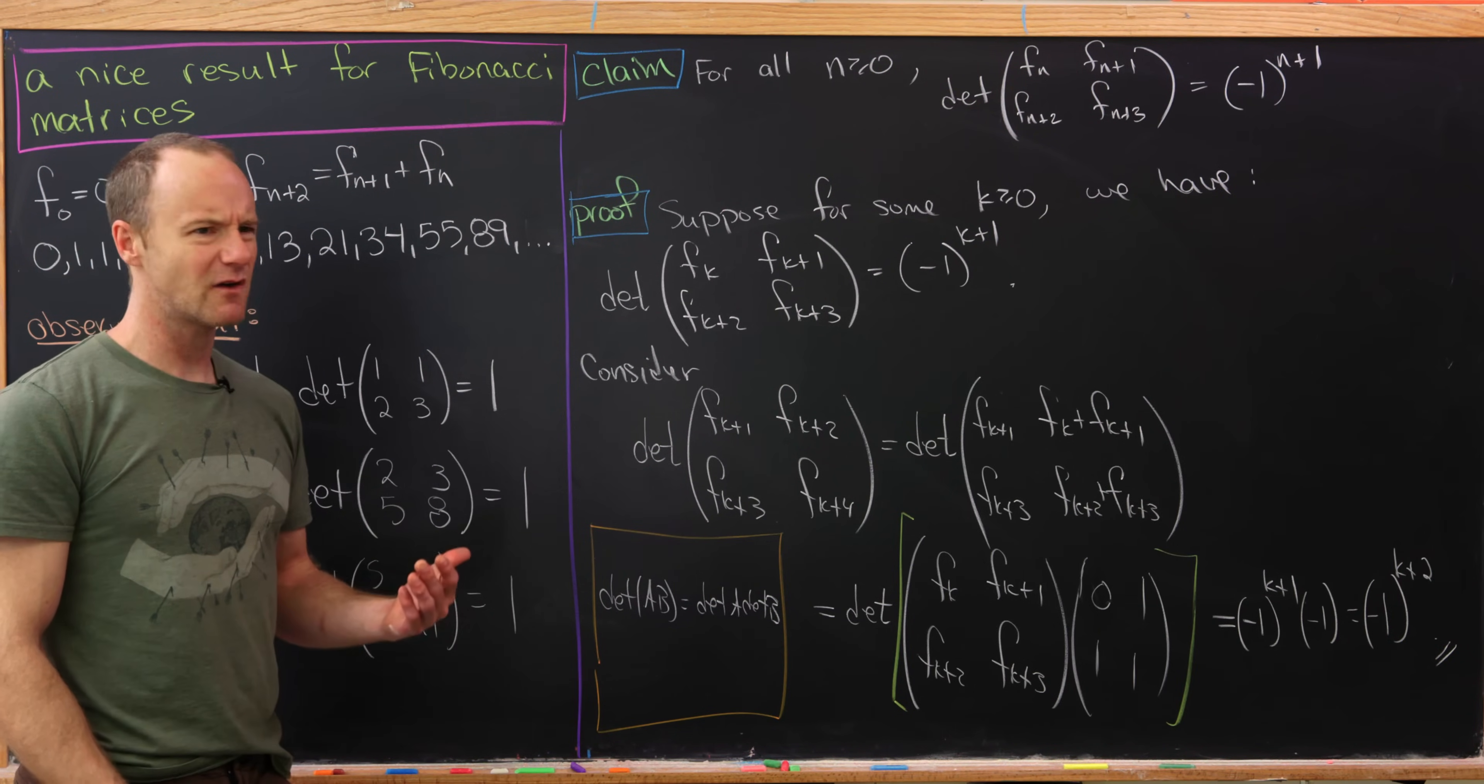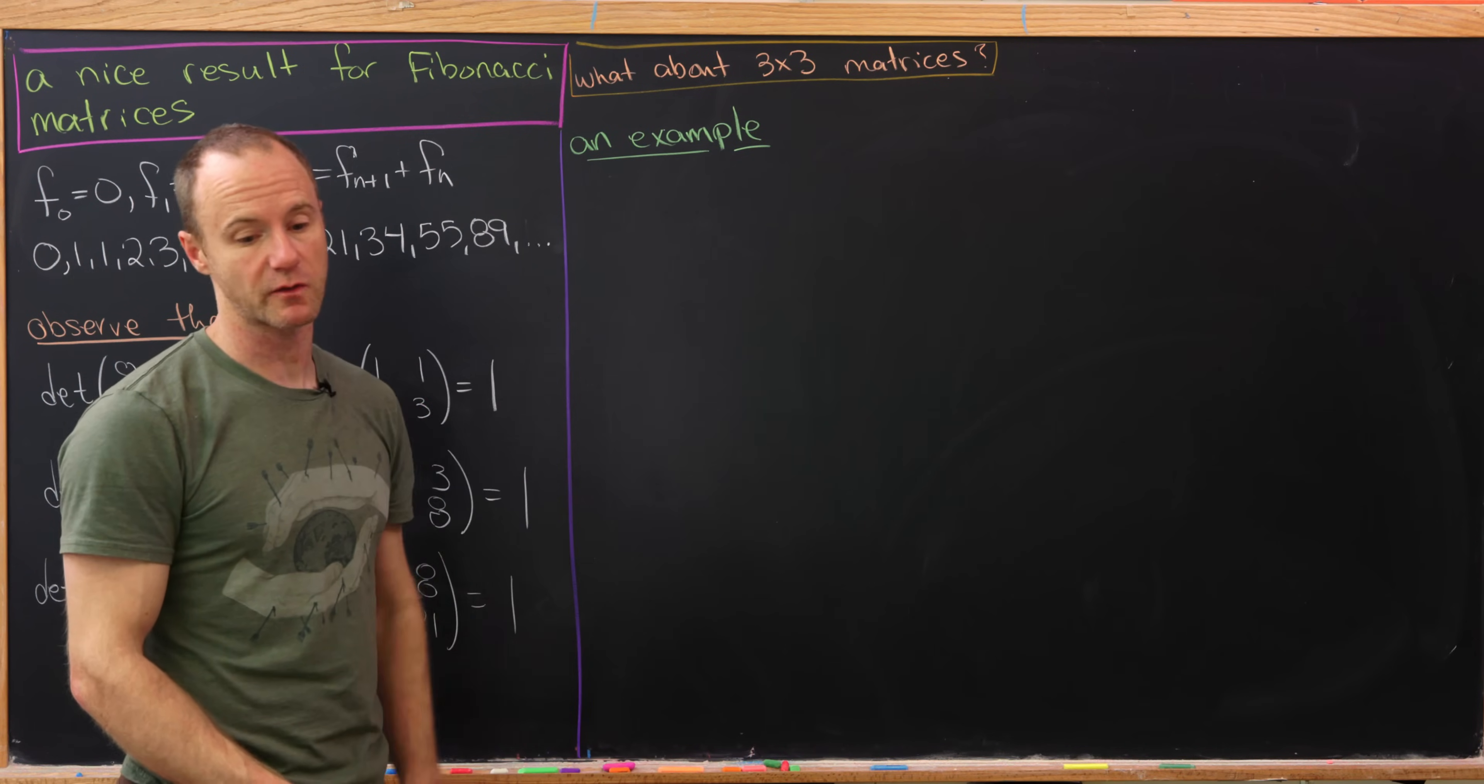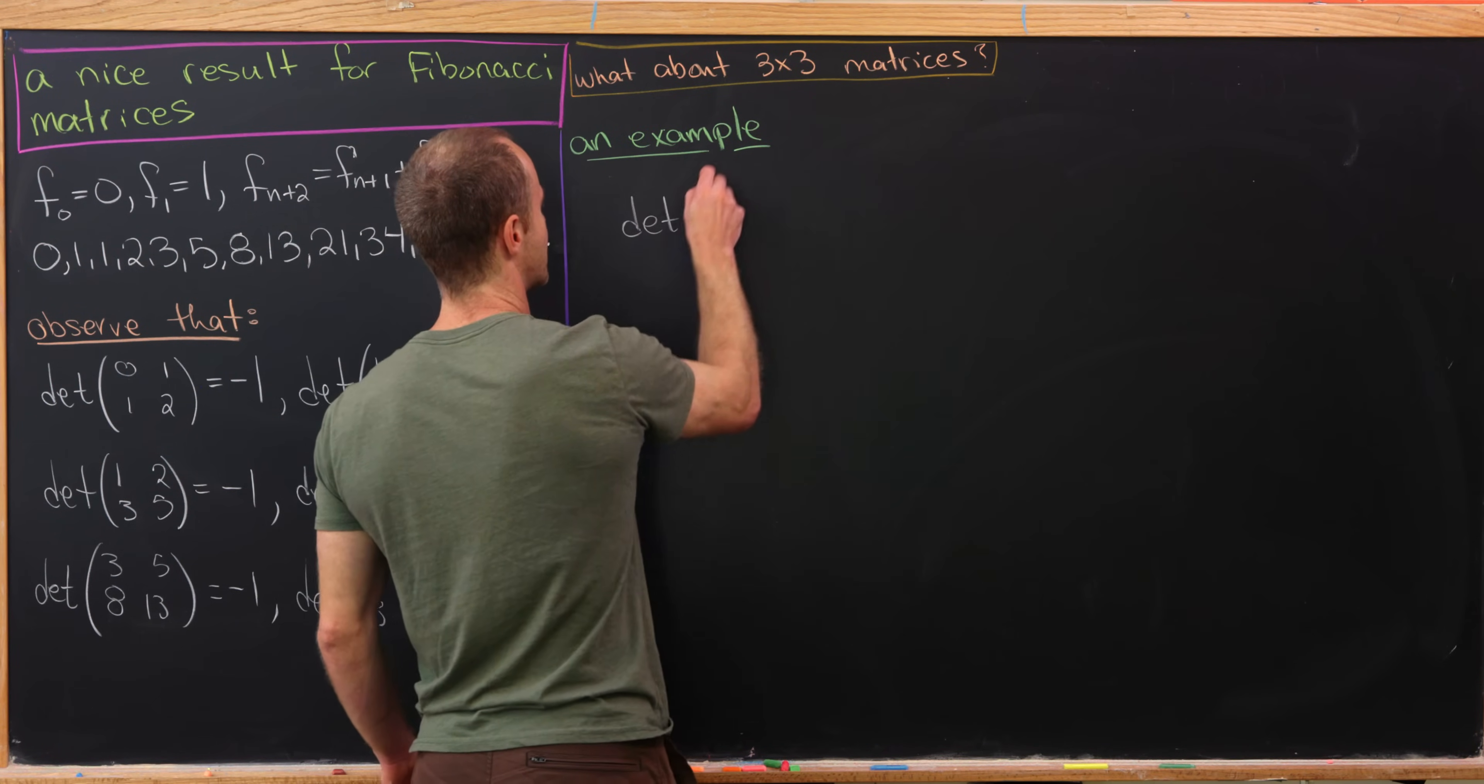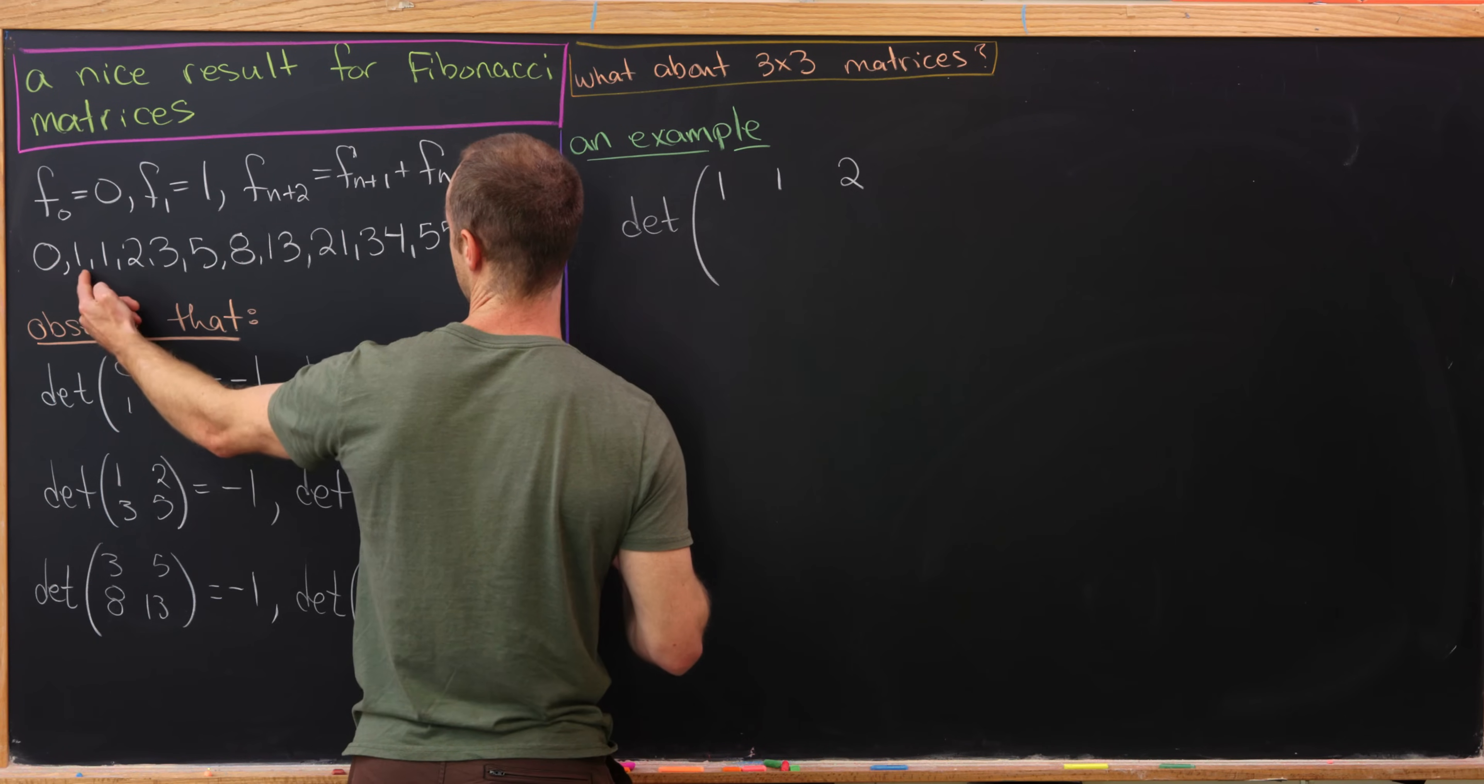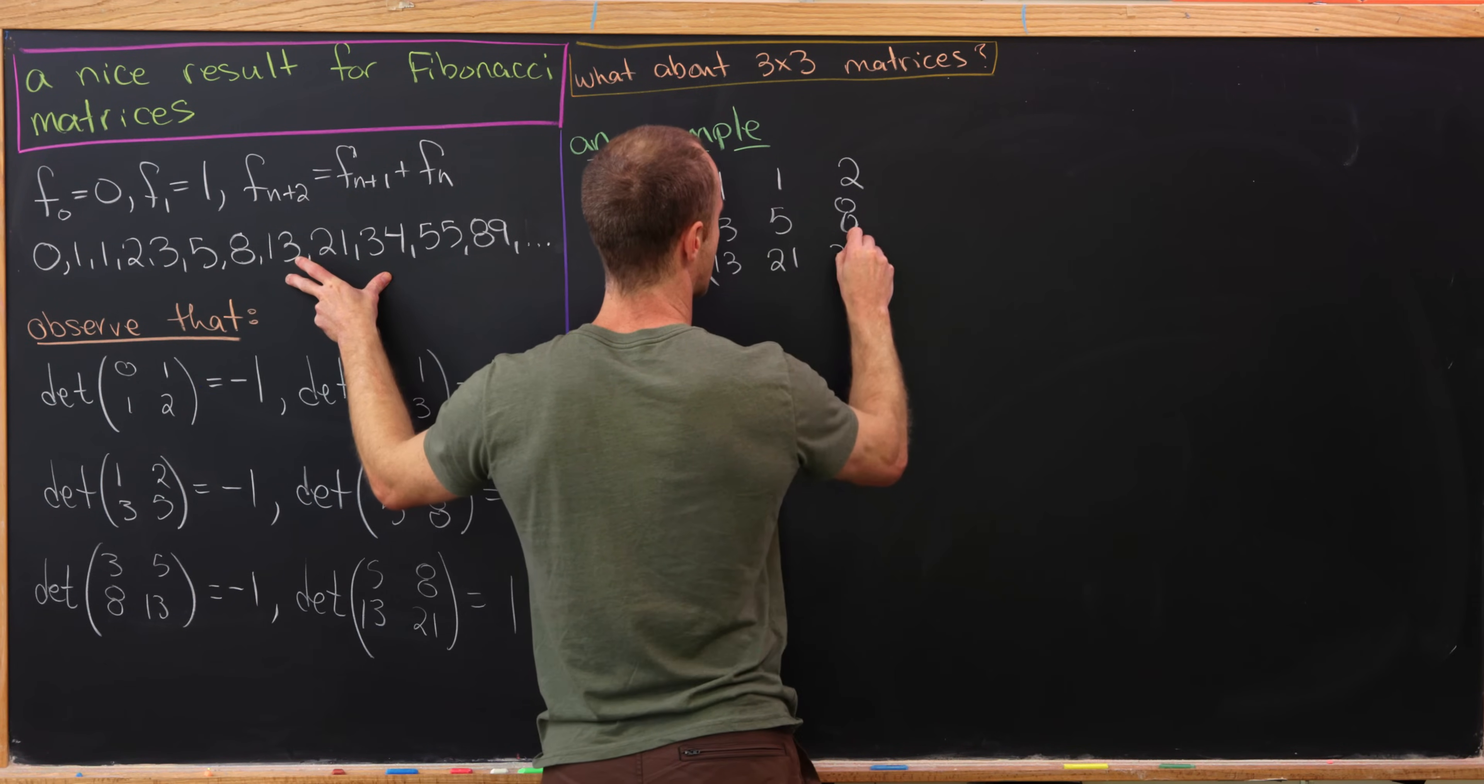Okay. So maybe now let's look at what's going on with 3 by 3 or larger matrices. So like I said, we're going to look at what happens with 3 by 3 matrices here, and we're going to start with an example. And maybe that example will be one of the first 3 by 3 matrices. So let's look at the determinant of the matrix which has 1, 1, 2. So that's the maybe not the first 3, but after the 0. So the first, second, and third Fibonacci number. Next will be 3, 5, 8. And then next will be 13, 21, and 34.